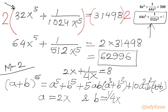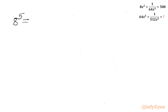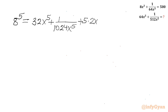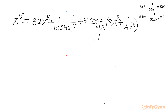Applying a = 2x and b = 1/(4x), with a + b = 8. The left-hand side is 8⁵. The right-hand side gives: (2x)⁵ + (1/4x)⁵ = 32x⁵ + 1/(1024x⁵), plus 5 × 2x × 1/(4x) × (8x³ + 1/(64x³)) — which is the given equation value of 500 — plus 10 × (2x × 1/(4x))² × (2x + 1/(4x)), which is 10 × (1/4) × 8.